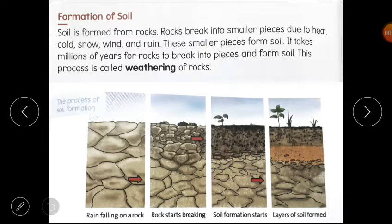Soil is formed from rocks. Rocks break into smaller pieces due to heat, cold, snow, wind and rain. These smaller pieces form soil. So jo soil hai, wo toot jaati hai small pieces mein. Heat, cold, snow, wind and rain ki vajase. It takes millions of years for rocks to break into pieces and form soil. This process is called weathering of rocks.